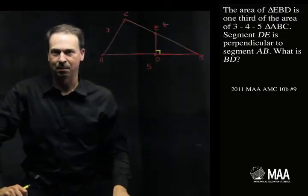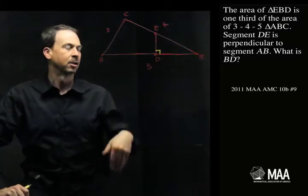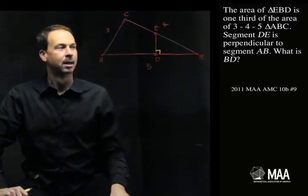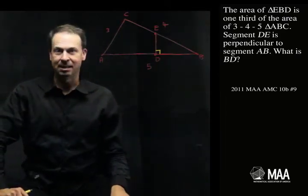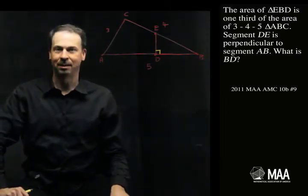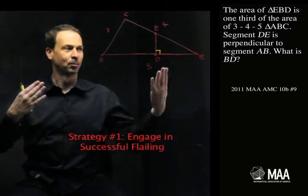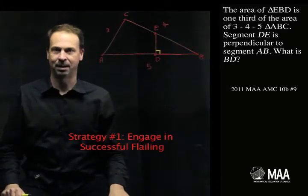Emotionally, I don't feel too scared by this problem. It feels familiar. It feels like a standard geometry type question. I'm sure there are twists and turns in it. But I still need to do something. I'm not quite sure what that is. So let me just engage what I call strategy number one, successful flailing. Do something. Go through it. List what you know about the situation. Hopefully things will fall into place.